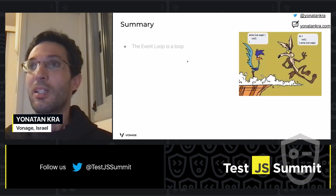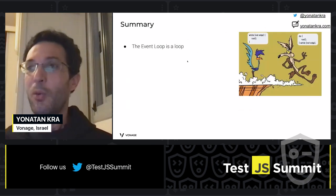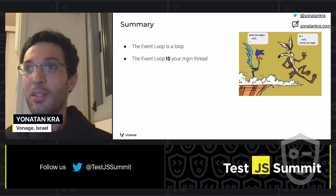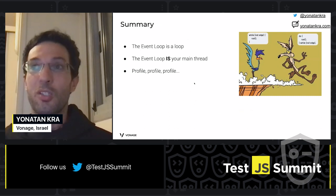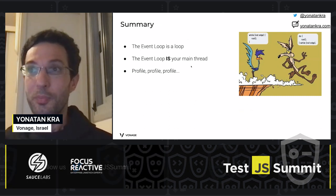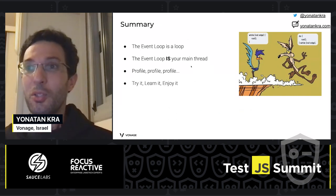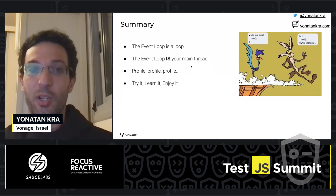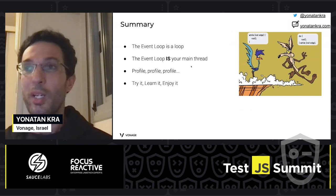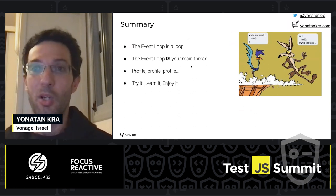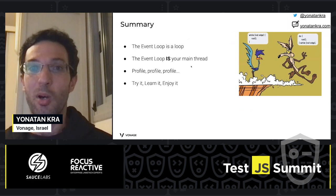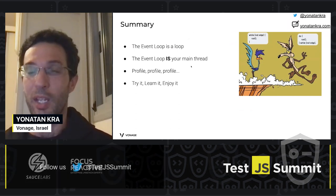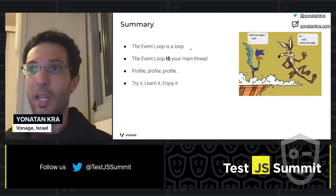To summarize: we showed the event loop and how it manages our main thread, so we don't want to block it. I can't stress enough the importance of profiling while optimizing your runtime performance. I'd really like you to try to learn it and enjoy it — there's a lot to read about it. You can read it on my blog, on the Google Web Dev blog, and there's lots more around it on the internet. I hope you enjoyed it. Thank you.